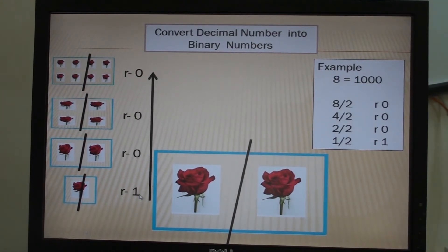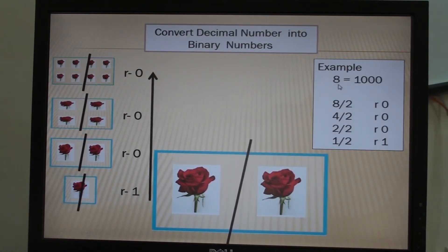So it will give you the answer as 1, 0, 0, 0. The decimal number 8 becomes 1000 in binary.